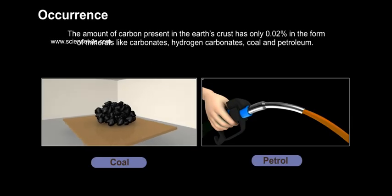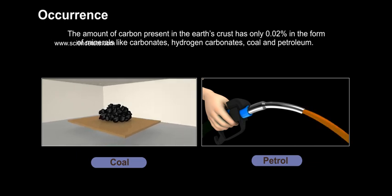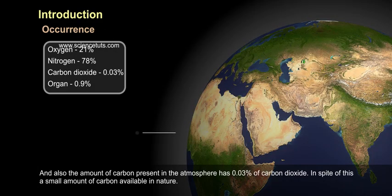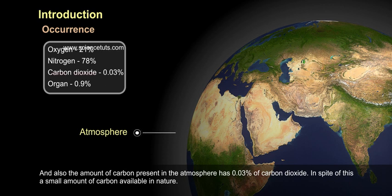Occurrence: The amount of carbon present in the earth's crust is only 0.02% in the form of minerals like carbonates, hydrogen carbonates, coal, and petroleum. Also, the amount of carbon present in the atmosphere is 0.03% of carbon dioxide.